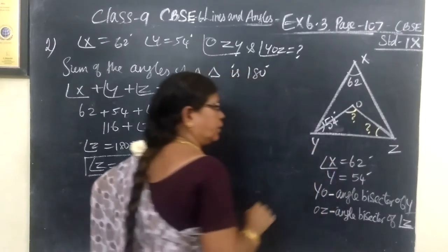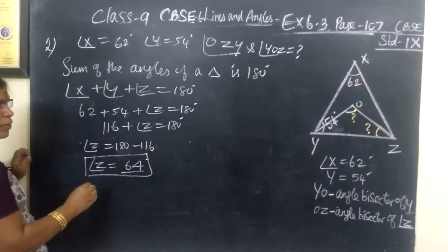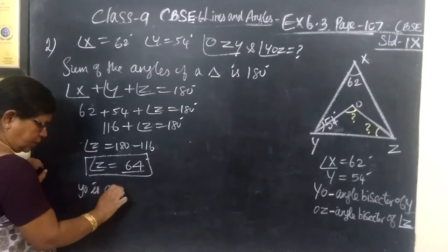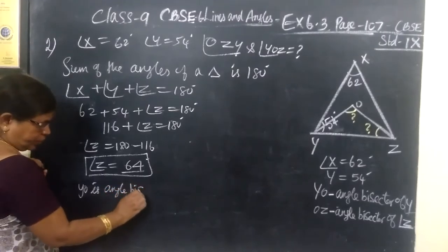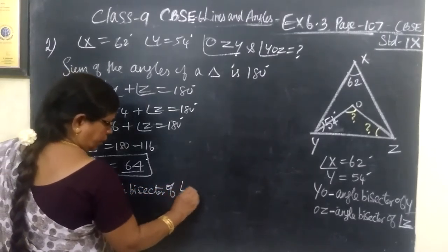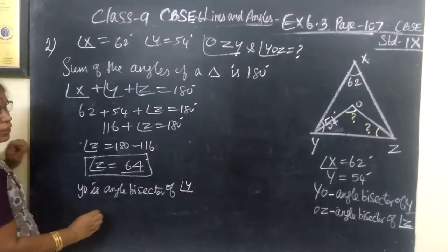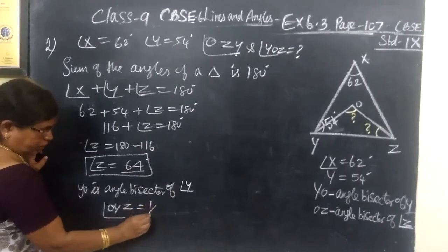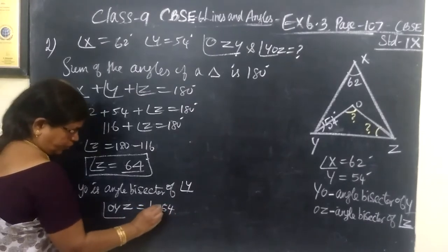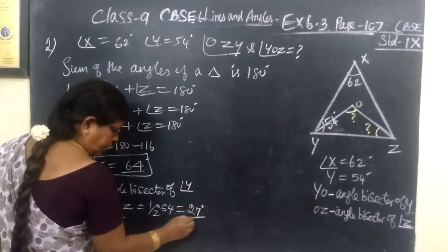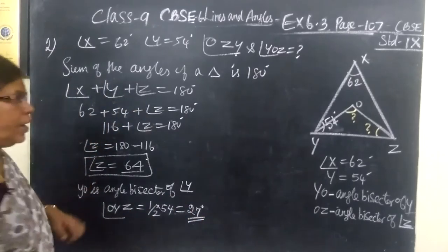You want to find OZY. Before that, it is given YO is angle bisector of angle Y. So, then it implies angle OYZ equal to half of 54, that is equal to 27 degrees.